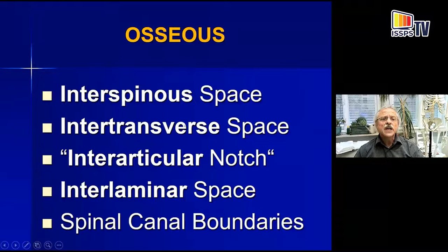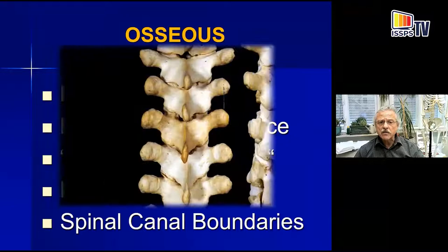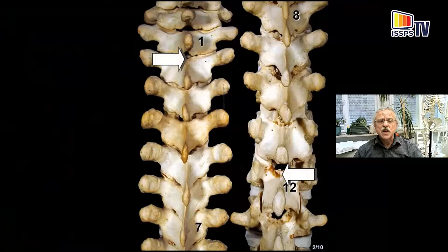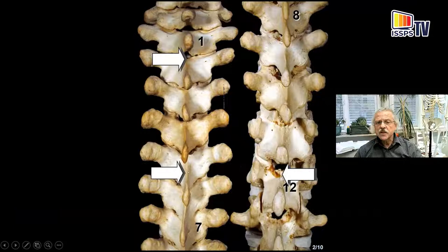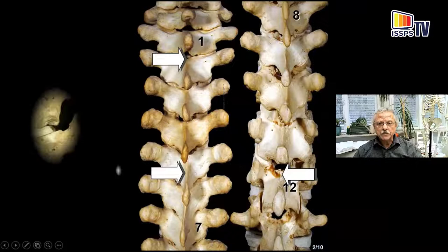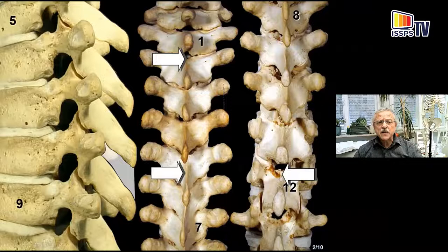I will cover the same topics as I did with the lumbar: interspinous, intertransverse — that's new — interarticular notch as I call it, interlaminous space, and spinal canal boundaries. Looking at the whole thoracic spine, you see the interspinous spaces. Between T1 and T2 you will see part of the vertebral canal shining through, and the same is true for T11-12. But in the mid-thoracic, if you go strictly forward, what you see from posterior is bone. You cannot reach the vertebral canal unless you direct your needle from lower to upper and/or from lateral to medial. The spinous processes are directed posteriorly and downward very steeply.